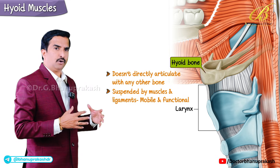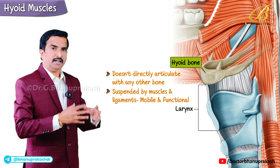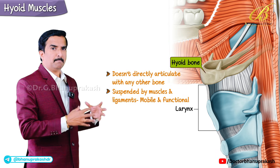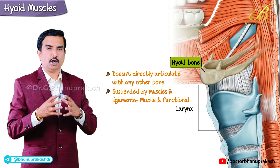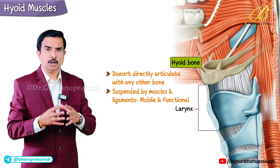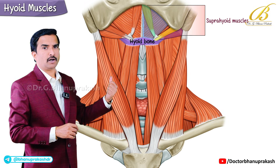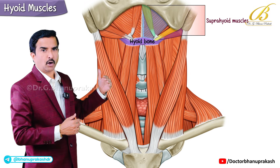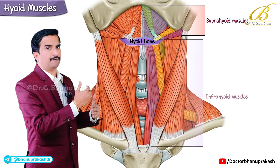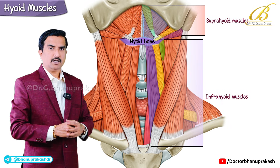In this topic we divide the muscles associated with the hyoid bone into two groups: suprahyoid muscles, those above the hyoid, and infrahyoid muscles, those below the hyoid.